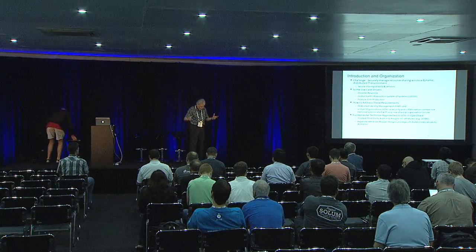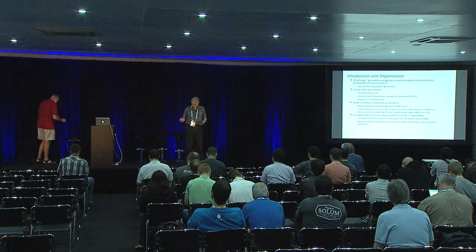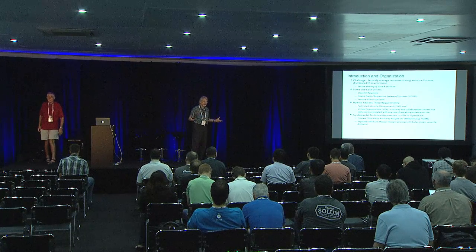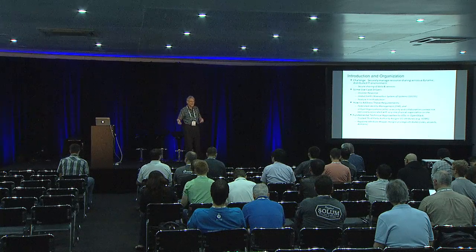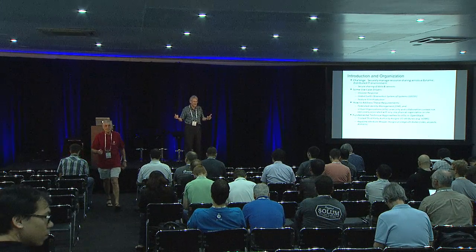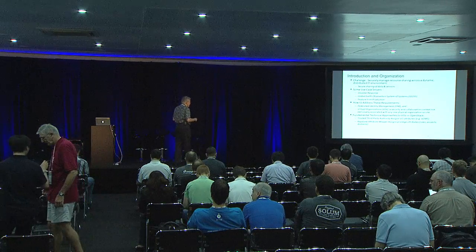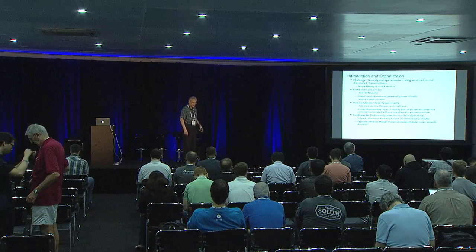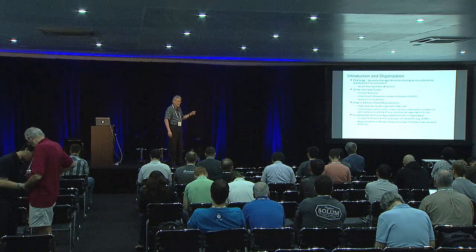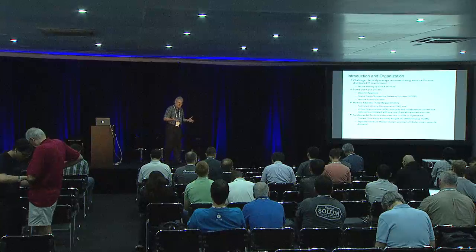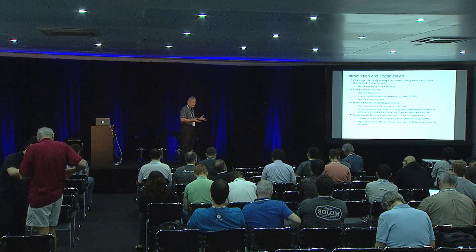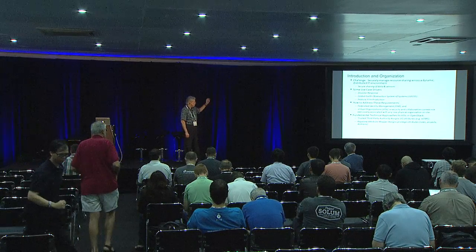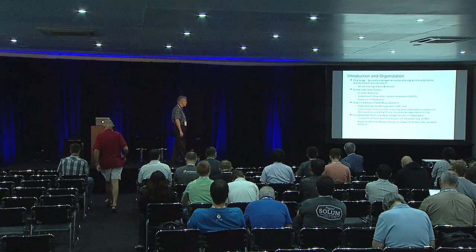The challenge here and why we were thinking about all this stuff is because we had some use cases where I needed to securely manage resource sharing across different sites. It's a dynamic IT environment where collaborating organizations could come and go on demand. I'm going to show some use case drivers — the first being disaster response. I just finished a funded project where we implemented VOs and did a proof of concept for using virtual organizations to manage container access in Swift, but that same approach is also applicable to GEOS and feature film production.